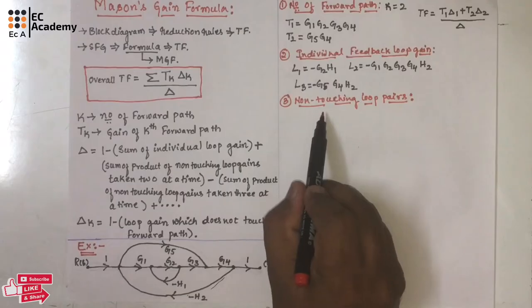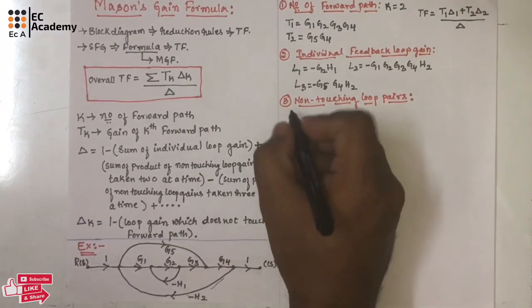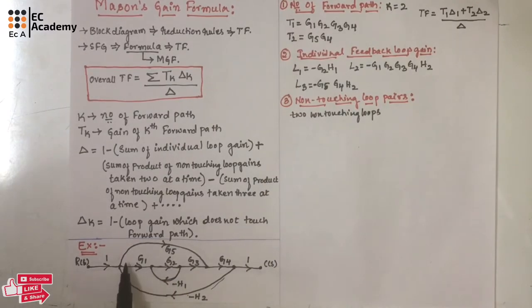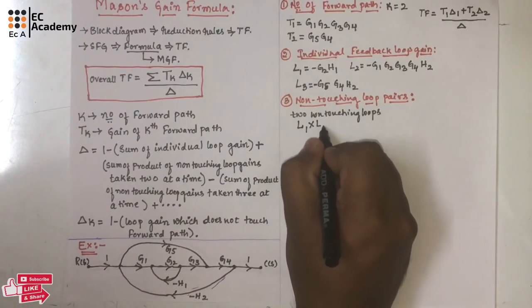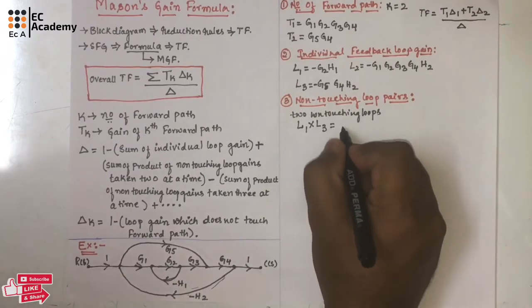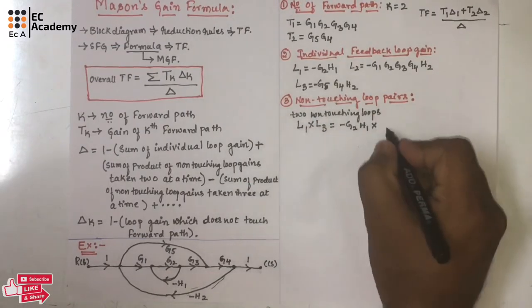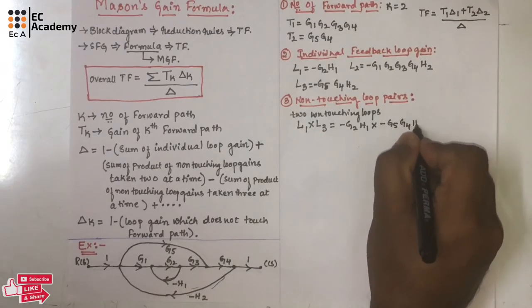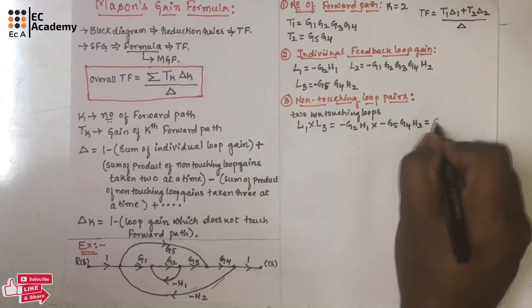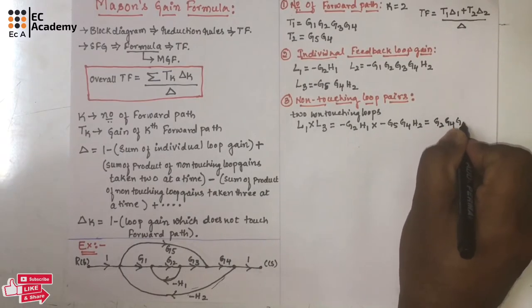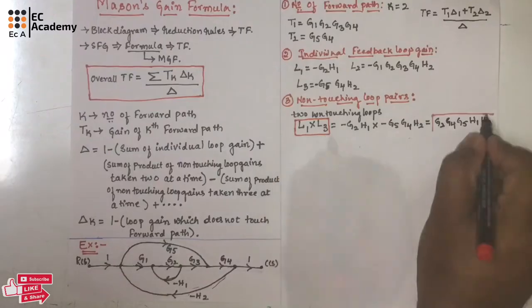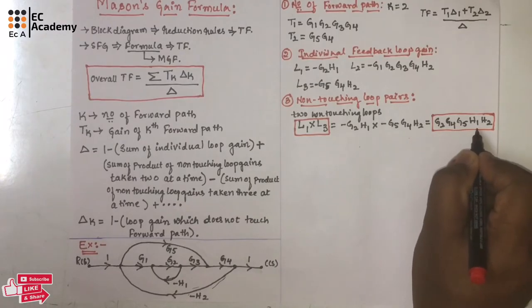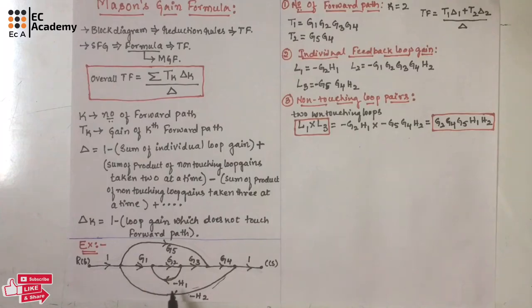Next, we need to find non-touching loop pairs. Observing the signal flow graph, L1 and L3 are non-touching loops. So we take L1 * L3 = (-g2*h1) * (-g5*g4*h2) = g2*g4*g5*h1*h2. There are no other two non-touching loop pairs, and no three non-touching loops exist in this signal flow graph.